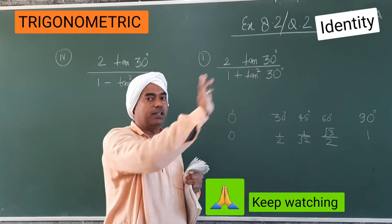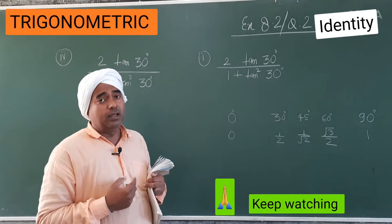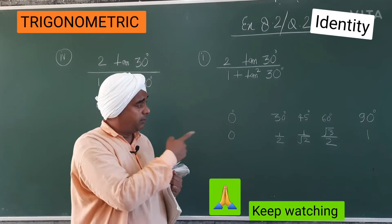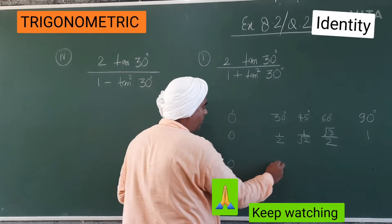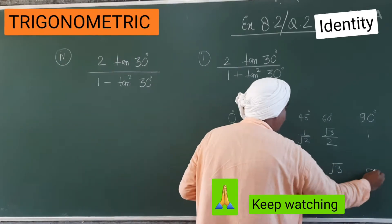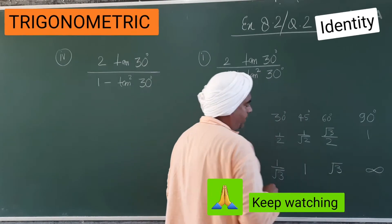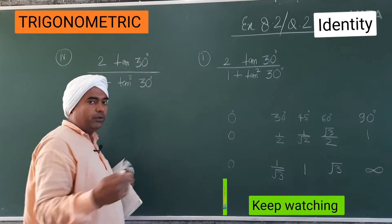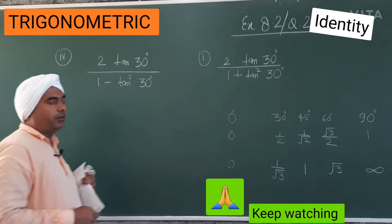For 0°, 30°, 45°, 60°, and 90°, the sine values are 0, 1/2, 1/√2, √3/2, and 1. When you practice and write these values three or four times you will learn them. For tan, the values are 0, 1/√3, 1, √3, and infinite. So tan(30°) is 1/√3 — that is the second value — so place 1/√3 here.